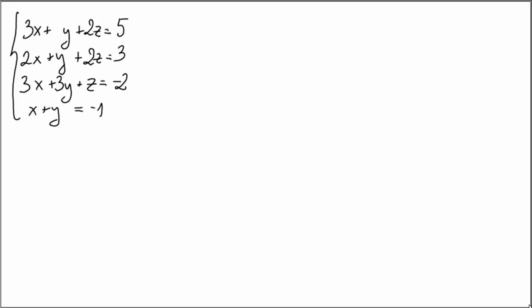Let's solve this system, a non-quadratic system of four equations with three unknowns. It's non-quadratic, so we're going to use Gaussian elimination. And here we'll use Gauss-Jordan method with pivoting.